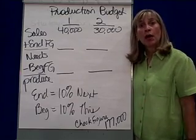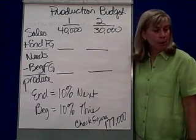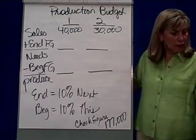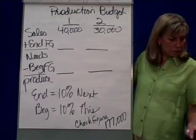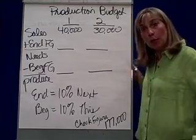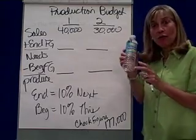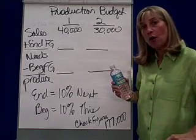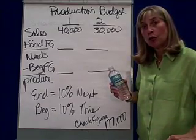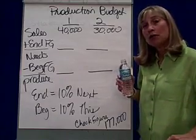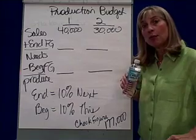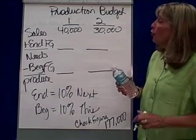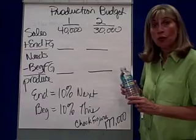In this problem it's each quarter. So returning to problem P6, we're making bottles of water. Once we know how many bottles of water we're going to sell each quarter, we now need to figure out how many bottles we need to produce. We're just going to do the first two quarters.